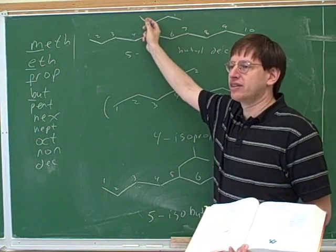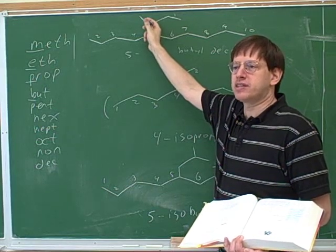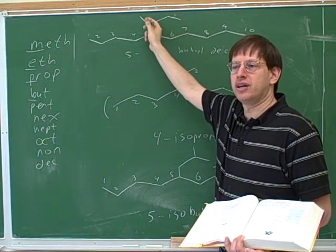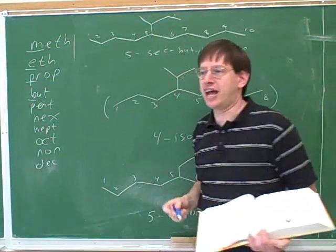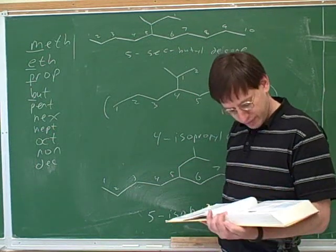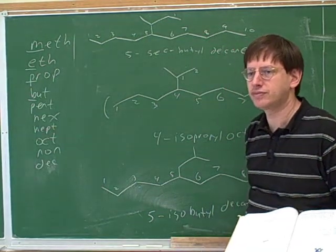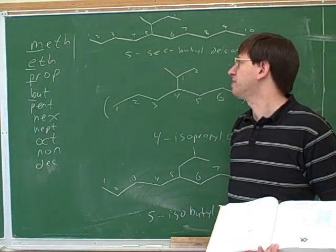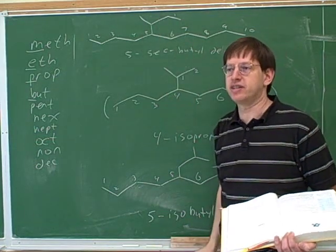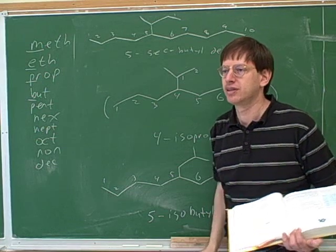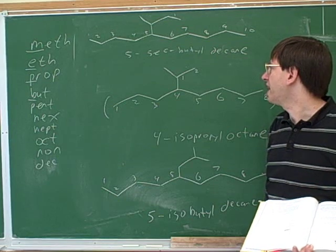We can focus on this carbon here. How many carbons is it connected to in the substituent? Two. So this is called sec-butyl, for secondary — secondary because it's attached to two other carbons in the substituent. So this would be called five sec-butyl. It's easy to see that it's butyl because there are four carbons.